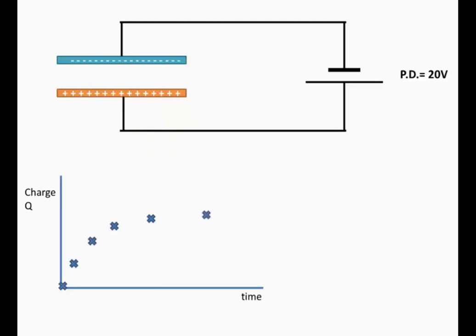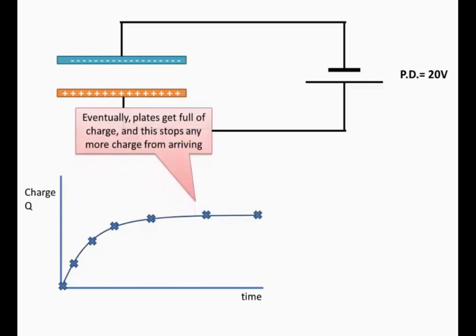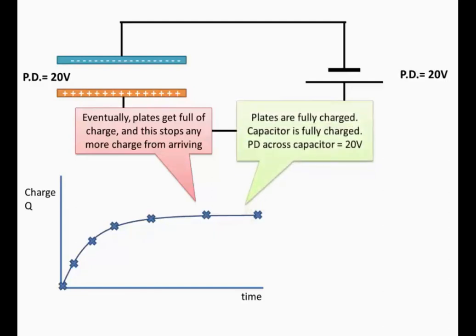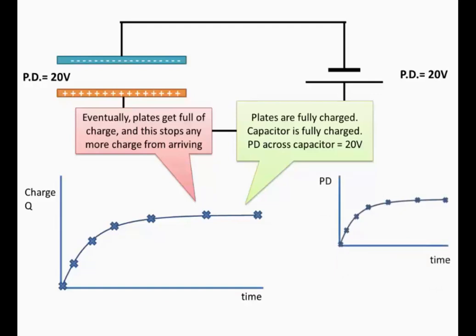So this is what we end up with. Eventually the plates get full of charge and this stops any more charge from arriving. So the potential difference across the plates will equal the battery voltage, which is 20 volts in this case — the plates are fully charged. When the capacitor is fully charged, the potential difference across it equals the battery voltage. If we look at a graph of how the potential difference across the plates changes with time, it looks very close to the charge graph, since Q equals VC. The potential difference goes up to a maximum value of 20 volts.